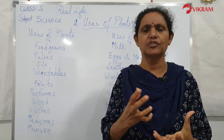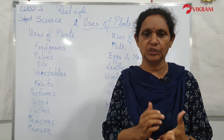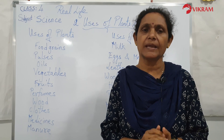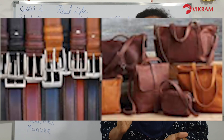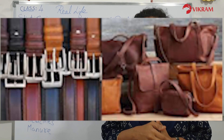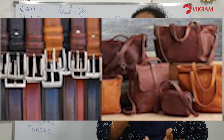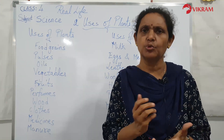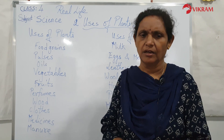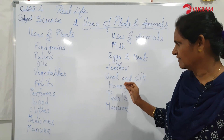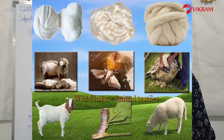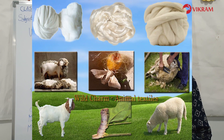Next is leather. We get leather from the hides of animals like goats and sheep. It is used for making belts, bags, shoes, and purses.